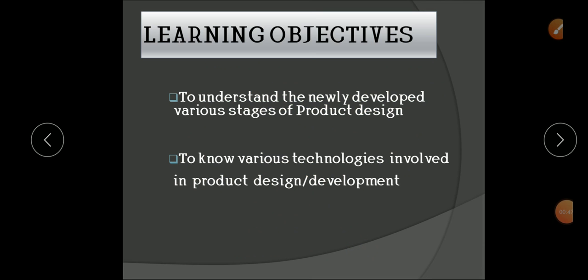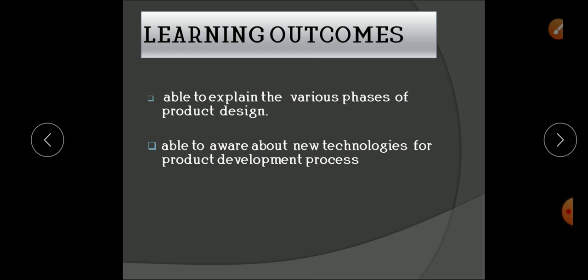The learning objective is to understand the various stages of product design, and the second objective is to know the various technologies involved in product design and development. The learning outcome is that students should be able to explain the various features of product design and be aware of new technology for the product development process.